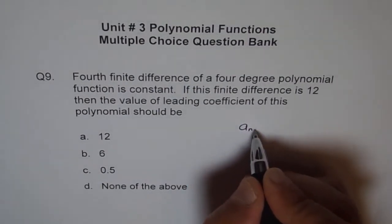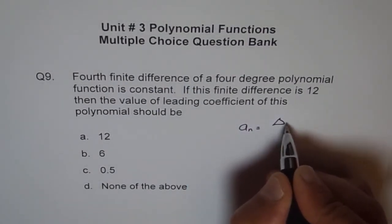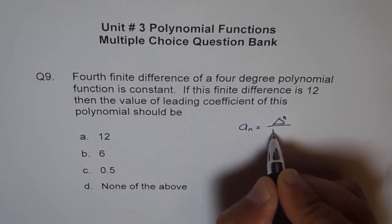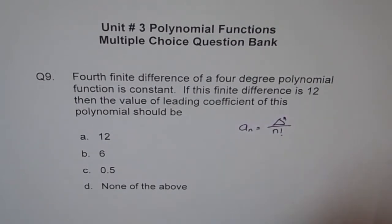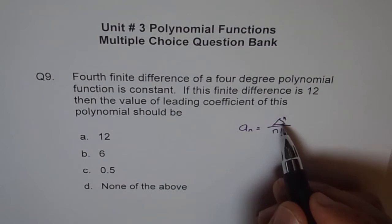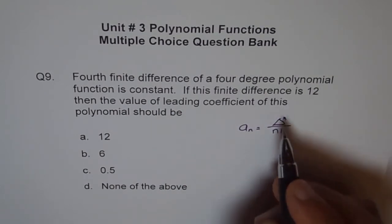The formula was a_n equals to constant finite difference divided by n factorial. Now here, 4th finite difference is constant, right, and it is equal to 12.